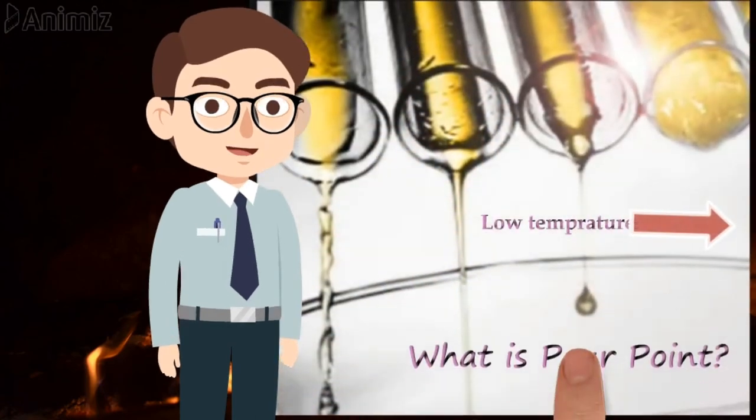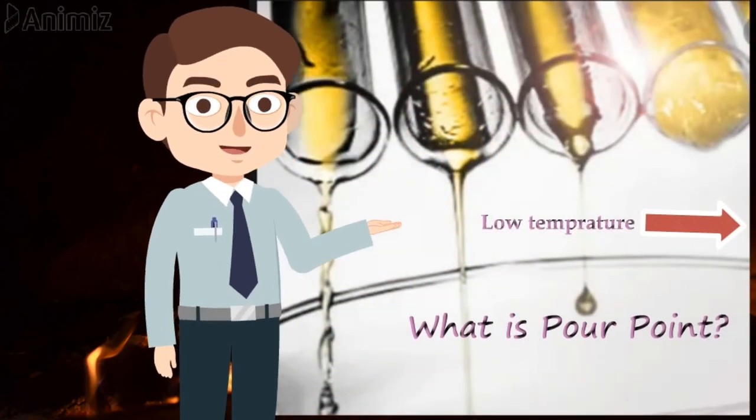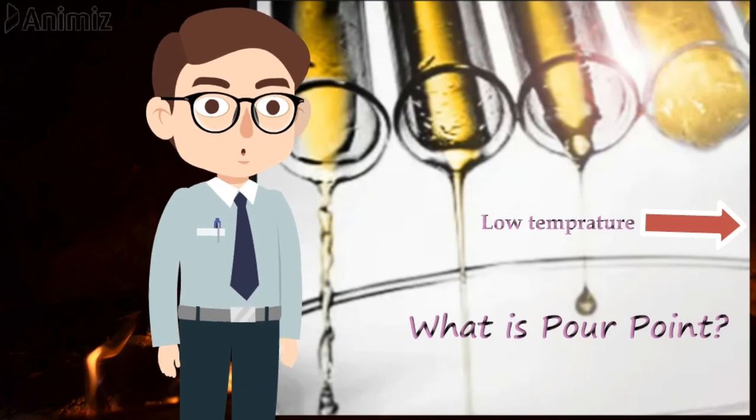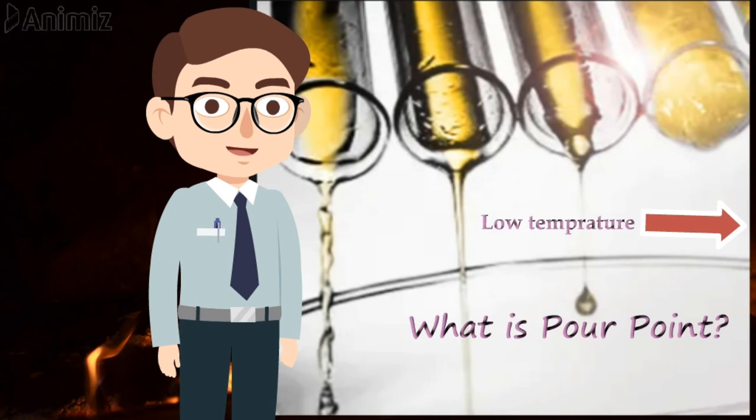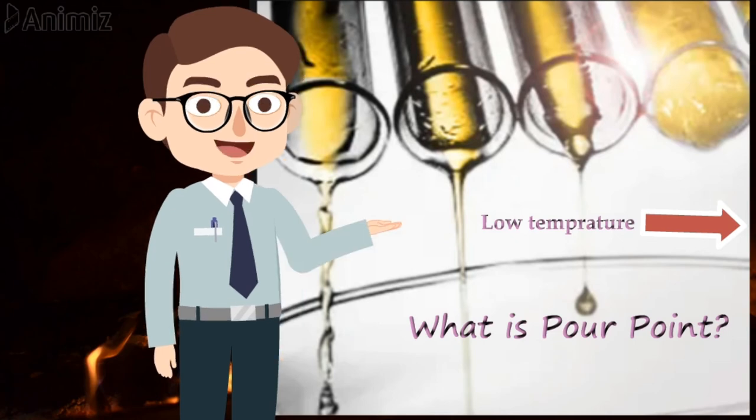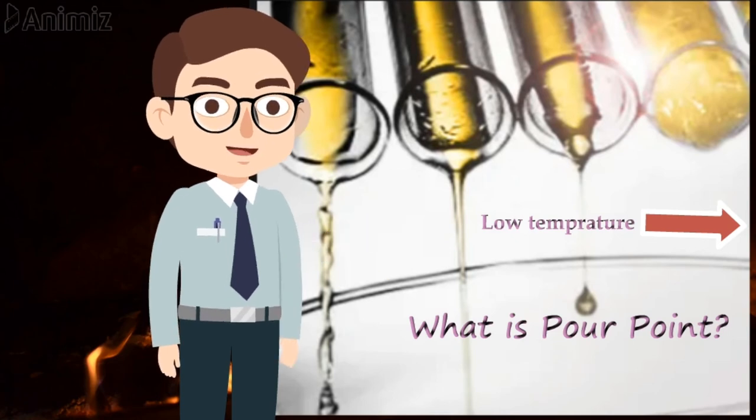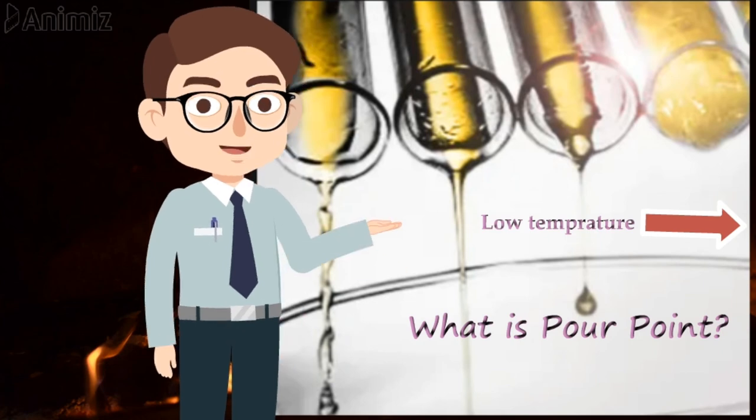The lowest temperature at which liquid or oil can flow when chilled is pour point. It means whenever the liquid cools, its density becomes higher and it starts to freeze. So, the minimum temperature at which oil can flow is pour point.